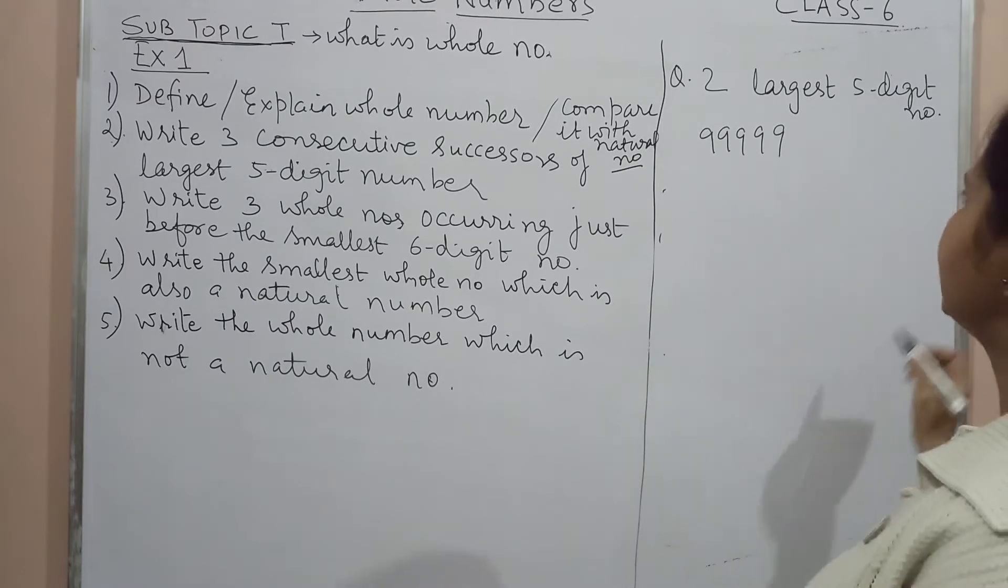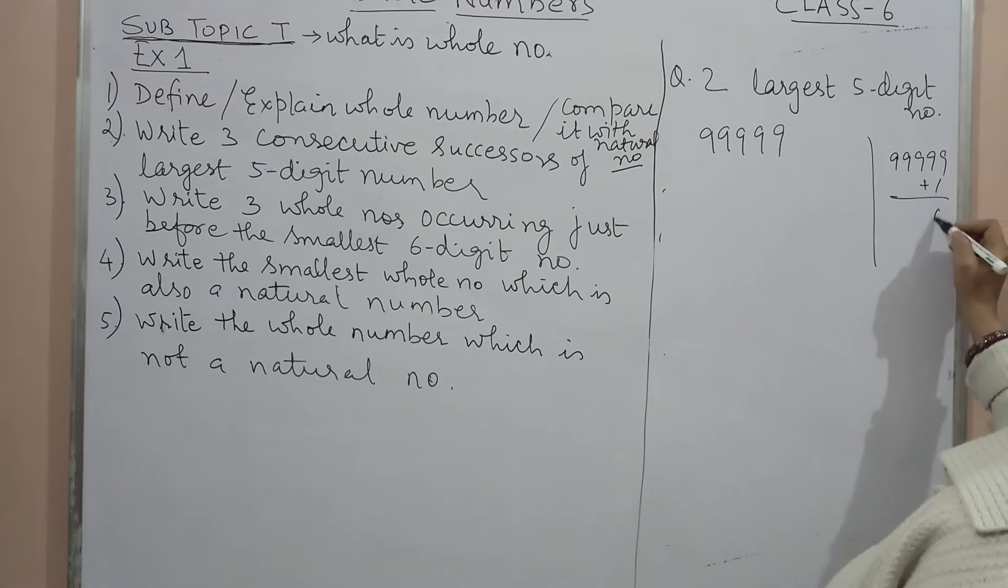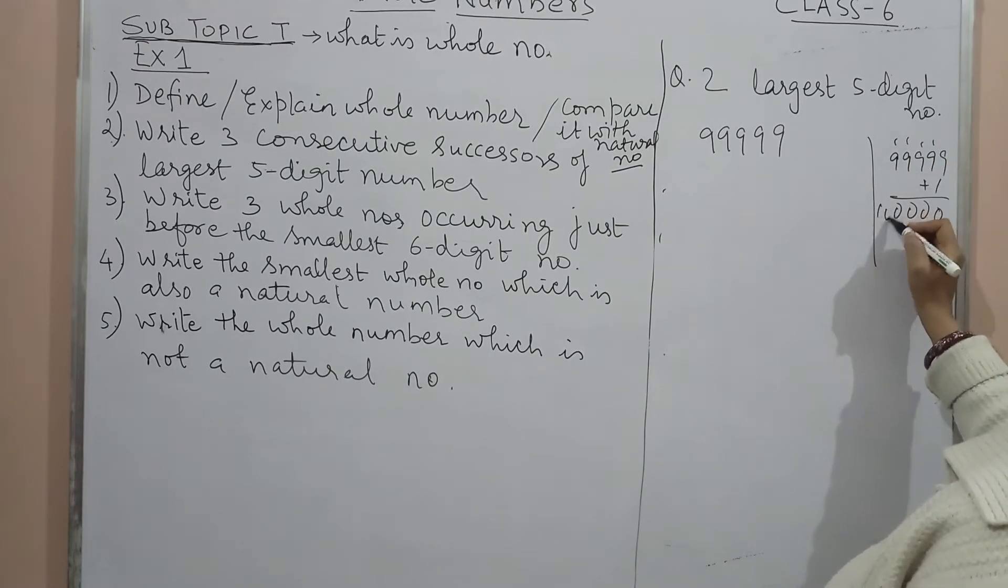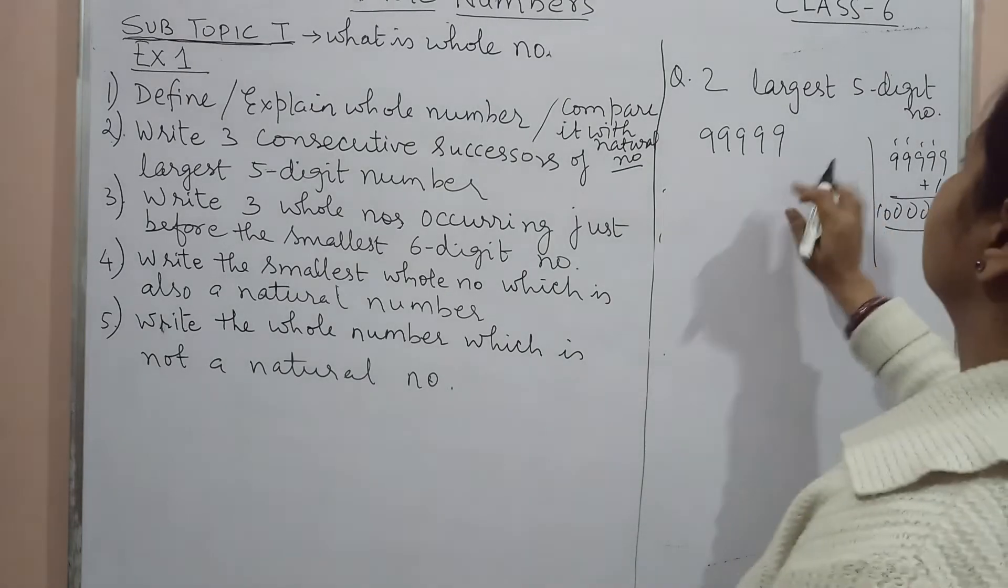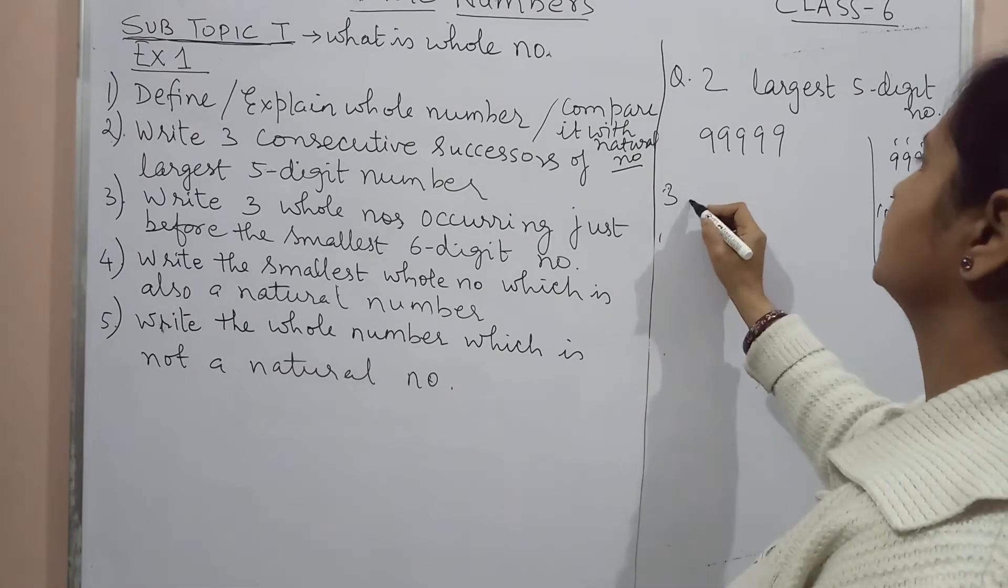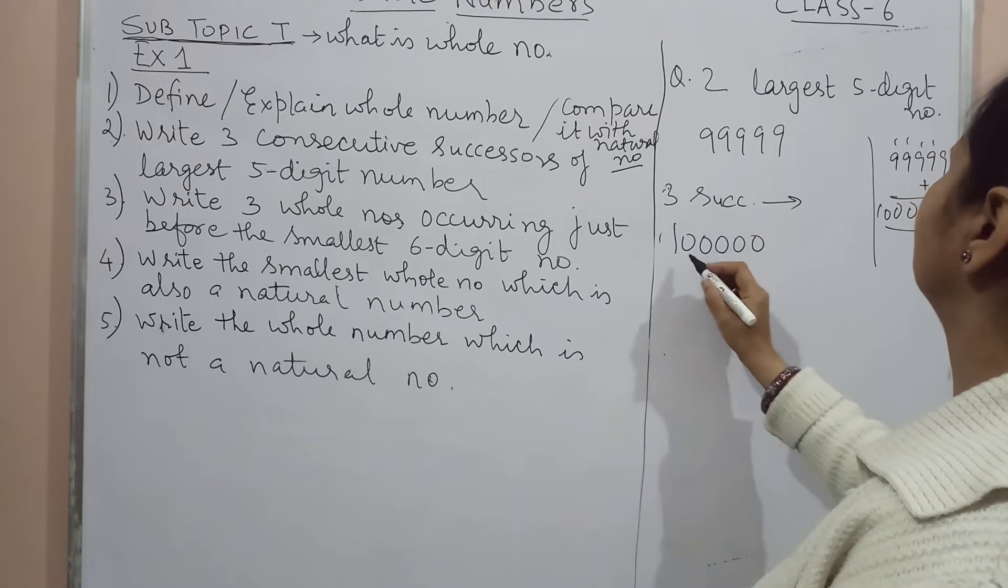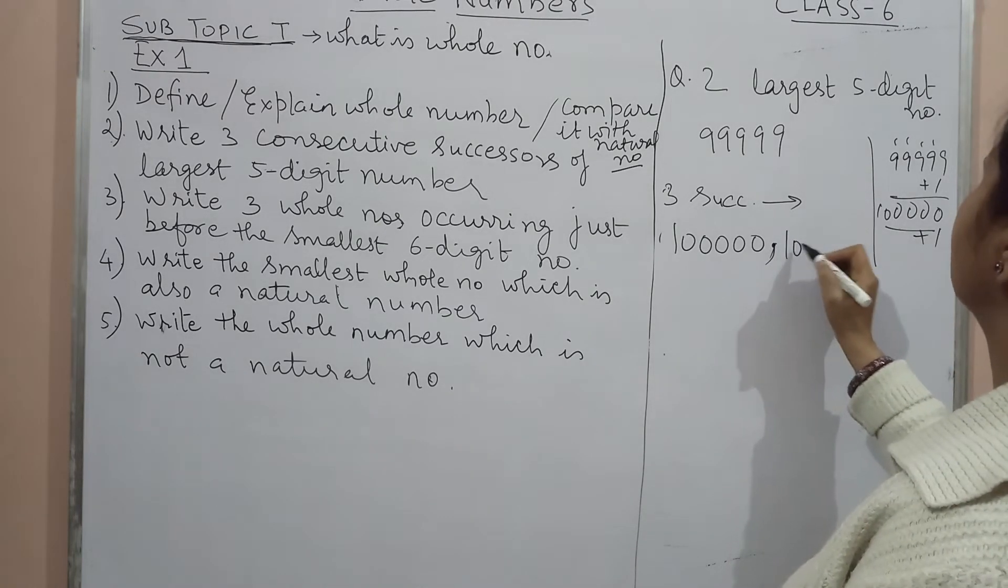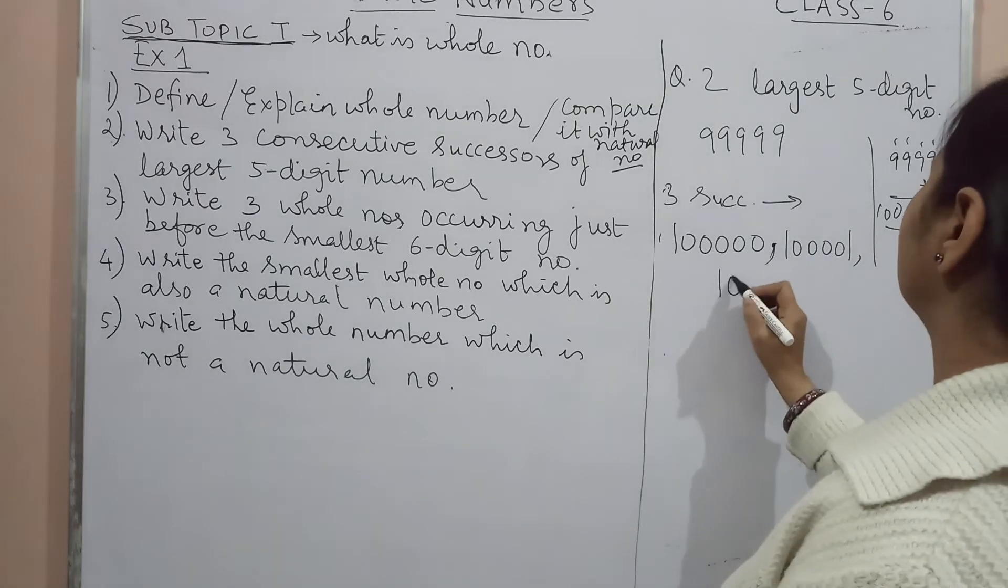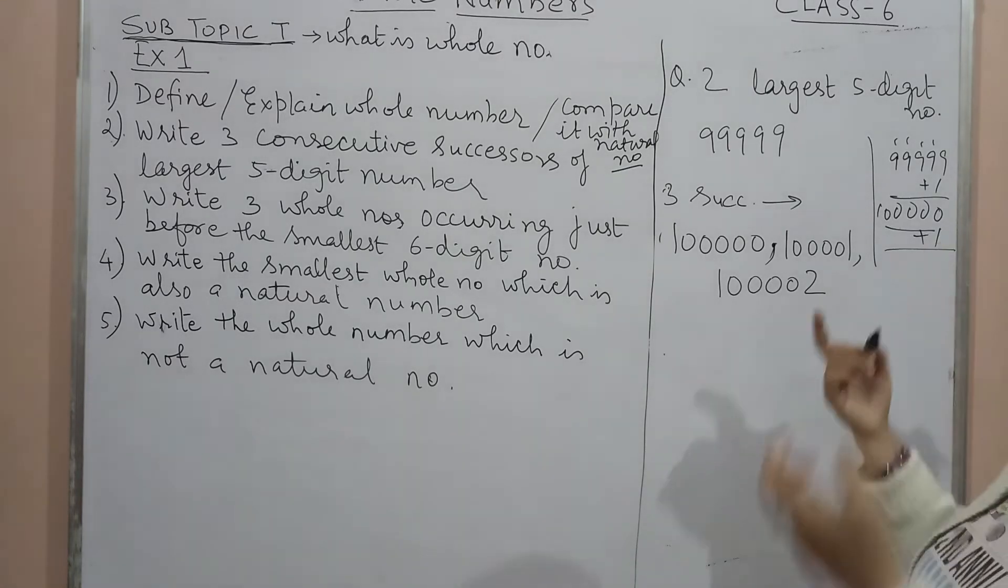The largest five-digit number is 99999. And the next number, we will add one, we will get zero, zero here, zero here, zero, and we have ten. So our next number, largest five-digit number is this. Therefore, three successors are 100000, then we add one, we will get the second one 100001, and the next one is four zeroes and two, 100002. So this is the answer for the second one.